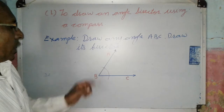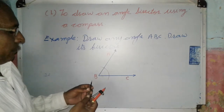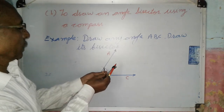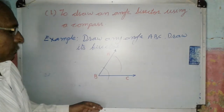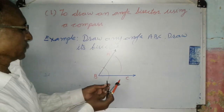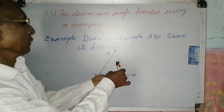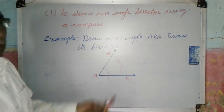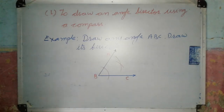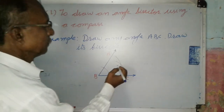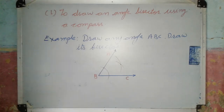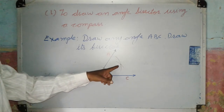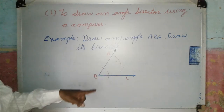To draw the two arcs inside the angle, take the two points of intersection. First, put the compass point on the first point of intersection and draw an arc inside the angle. With the same distance, put the compass point on the second point of intersection and draw another arc intersecting the first arc. We will get one point of intersection inside the angle. Now draw a ray from B passing through this point.